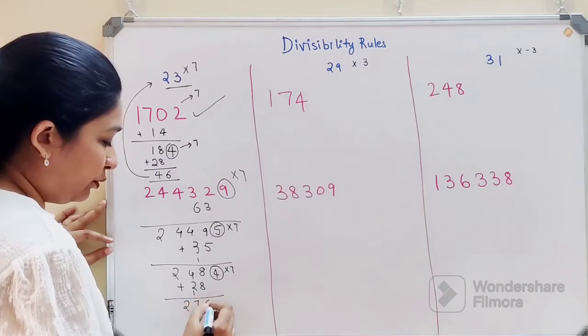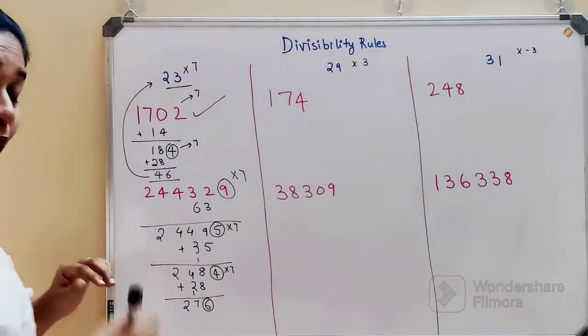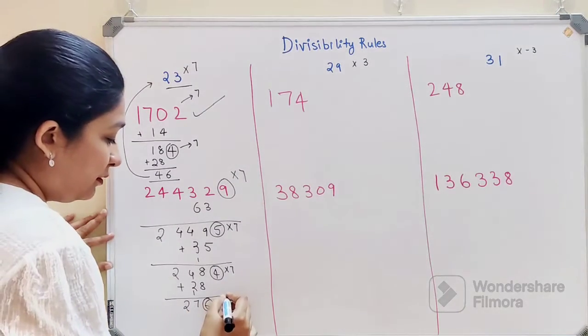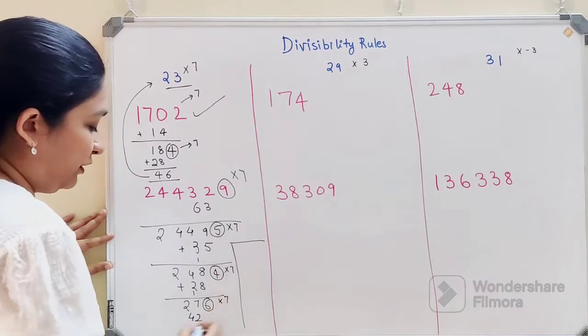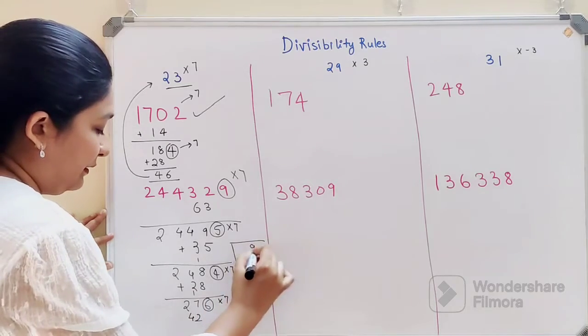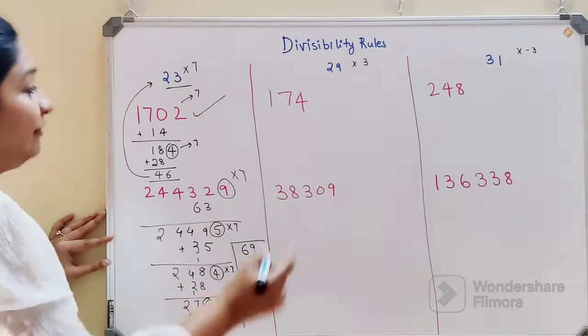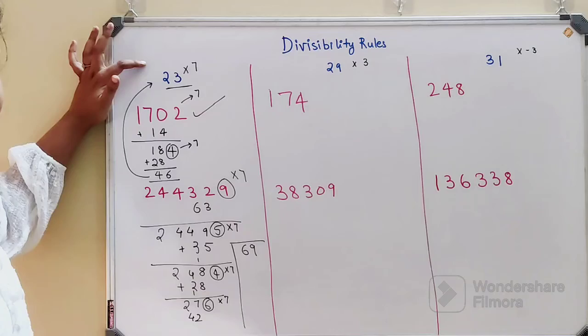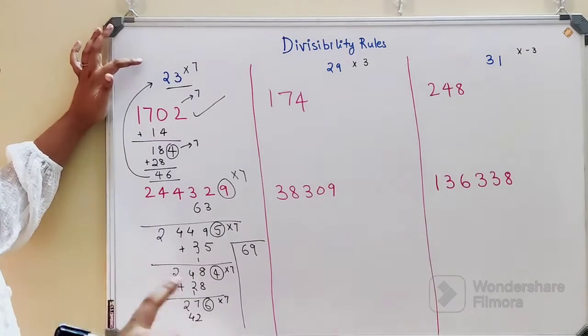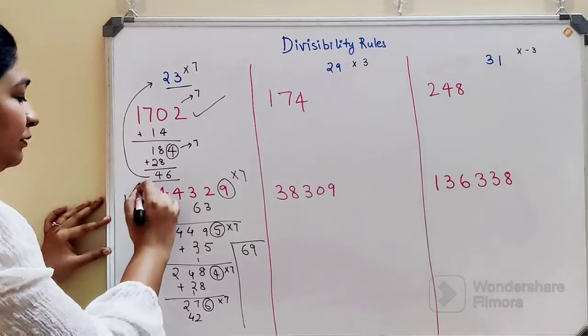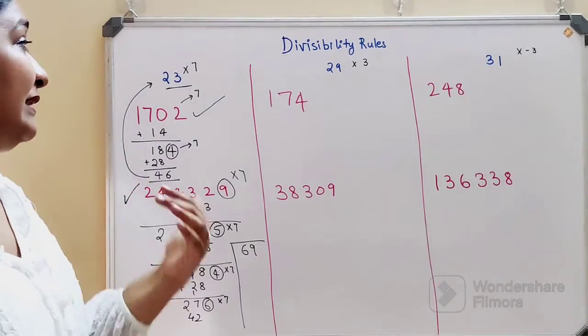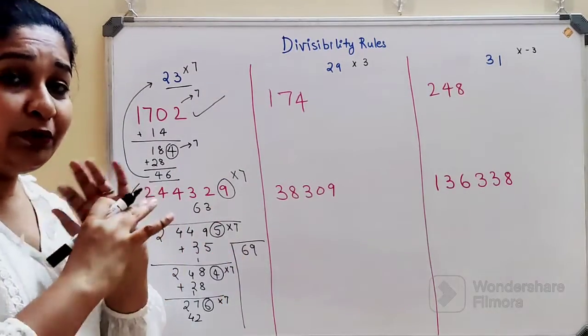Multiply 6 by 7 to get 42. 42 plus 27 is 69. Now 23 times 3 equals 69, so obviously this number is also completely divisible by 23. I hope you're getting the hang of this.